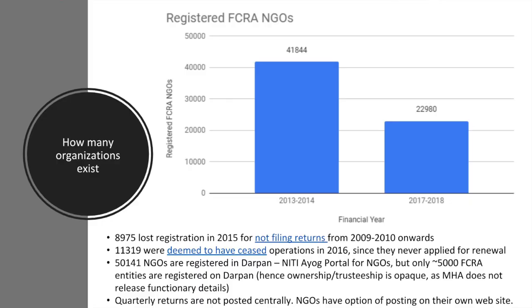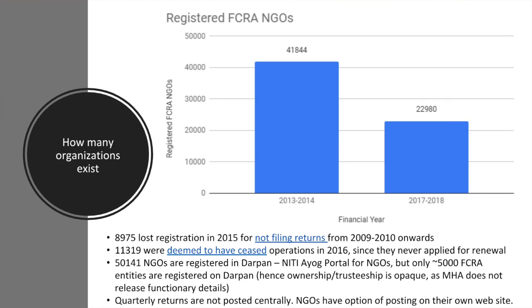In 2013-2014, around 40,000 organizations were registered as FCRA NGOs. By 2017-2018, only around 22,000 organizations remained registered. Why did they lose registration? About 8,900 organizations did not file a single return from the year the FCRA Act came into force. They were given one full year to comply, and in spite of that, they did not comply, so their registration was cancelled. Many had notices sent to their registered address from the Ministry of Home Affairs, and they did not reply.